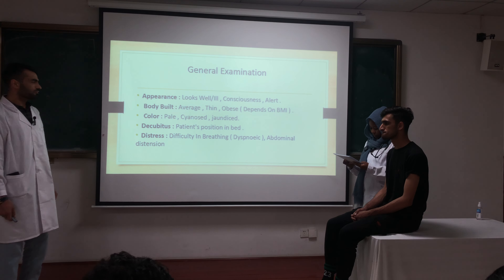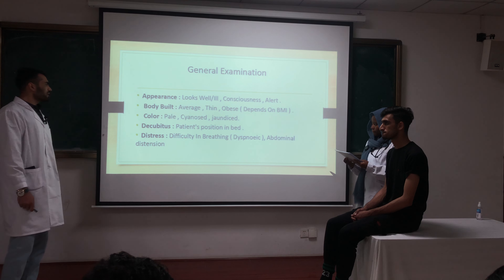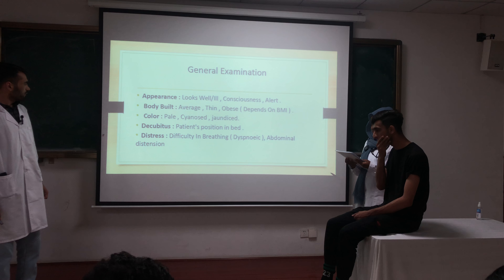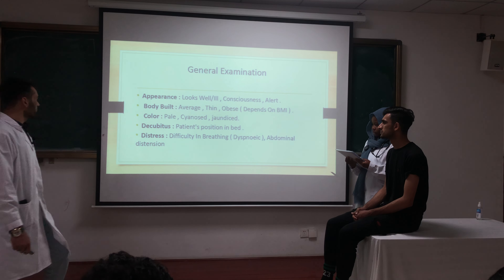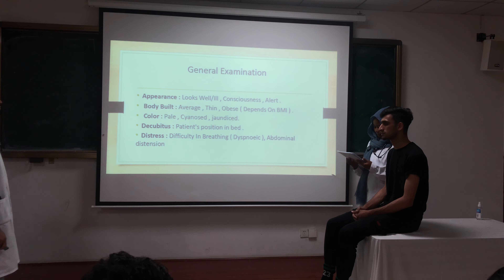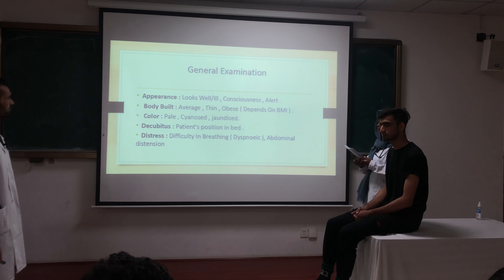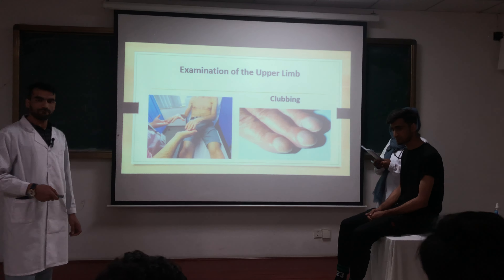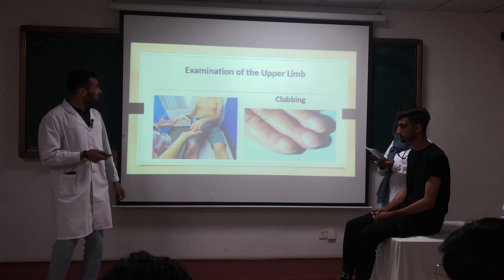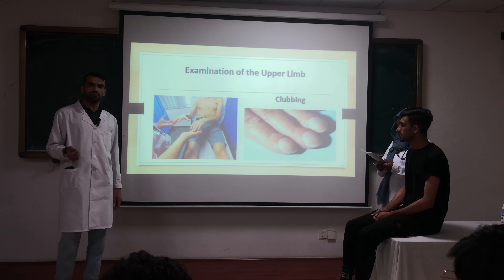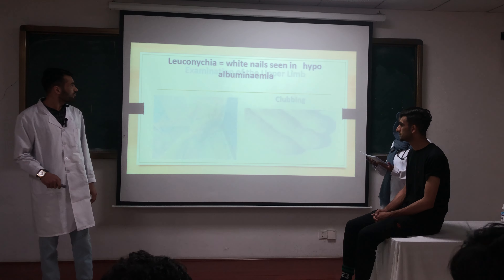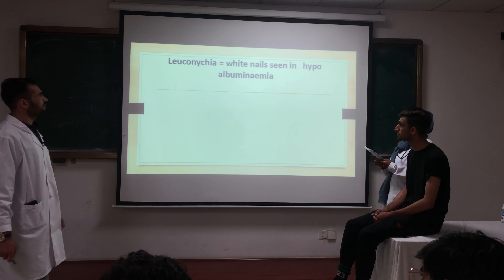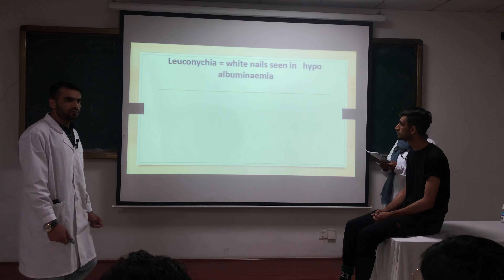General examination: assess appearance — whether the patient looks well, consciousness and alertness, body build (cachectic or obese), skin color, and note signs such as jaundice. Assess patient position in bed, any distress, difficulty breathing, or abdominal distension. Then proceed to examination of the upper limb, including clubbing of nails.